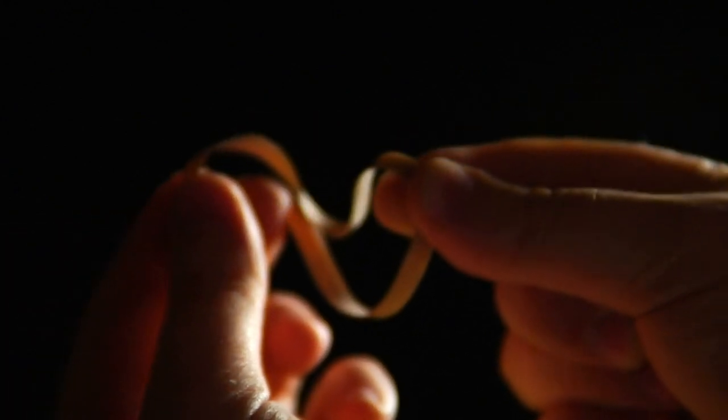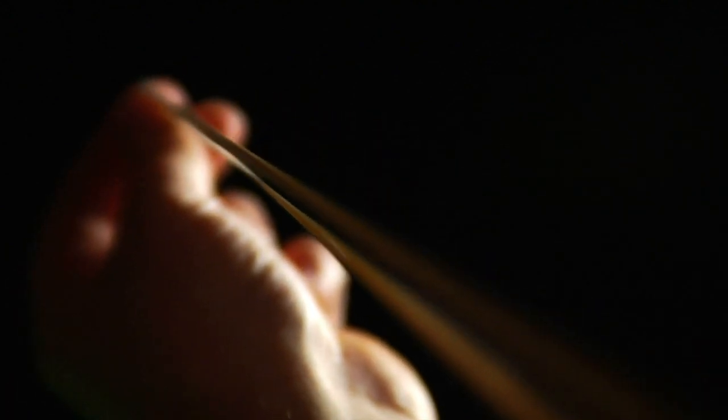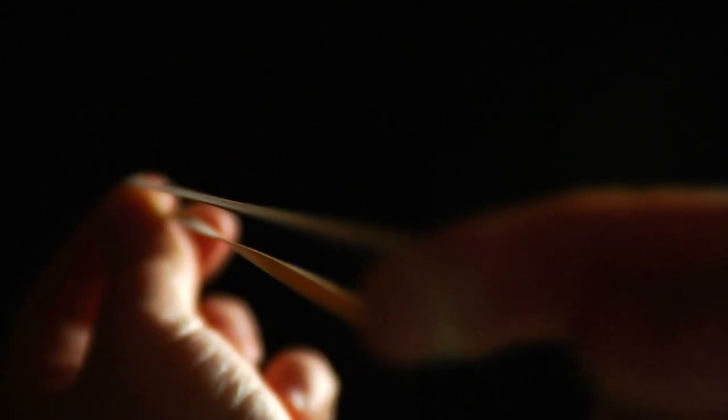Consider a rubber band for a moment. When it is stretched, energy is invested into its fabric as potential energy. When the rubber band is released, that energy goes into its motion and it becomes kinetic energy. In a similar way that the stretching of a rubber band puts energy into its fabric, the expansion of the fabric of space puts energy into the vacuum.